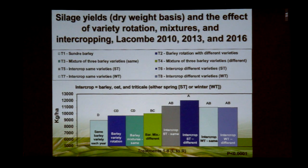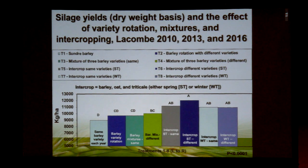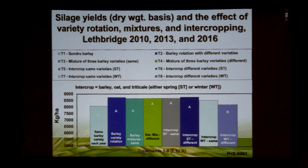What about yield? Looking at silage yield on a dry weight basis, our lowest tonnage was with continuous barley production — the same variety. There was a trend where variety rotation or mixtures with the same varieties improved things, though not significantly different. But once we went to a barley mixture with different components each year we saw a significant increase in tonnage, and it was our intercrops that provided the highest level of productivity. A similar picture at Lethbridge: lower disease levels, but as we added diversity for most treatments we could significantly increase our tonnage.